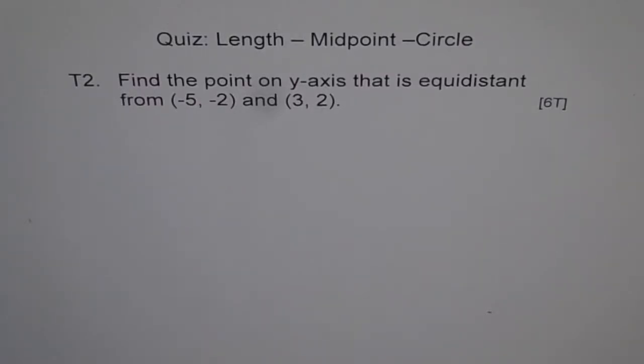Here is a thinking problem on length and midpoint. Find the point on y-axis that is equidistant from (-5, -2) and (3, 2). Try to do your problem and then see the solution. Okay, this is how I would like to approach.